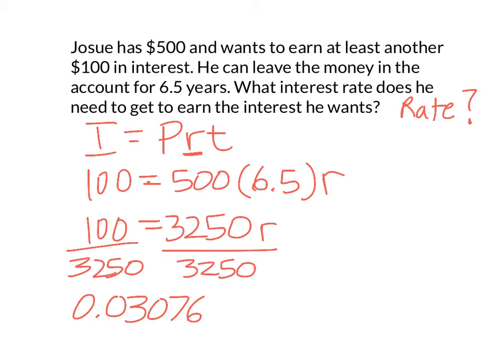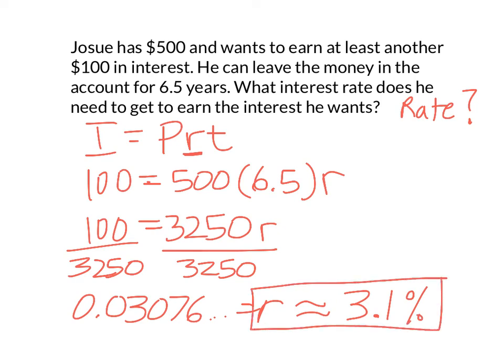We don't need that many decimal places. We're going to round to the nearest tenth of a percent, and of course we have to multiply by 100 to turn it into a percent — so times 100, that's 3.07, which rounds to 3.1%. And that's the interest rate he needs to earn in order to make the money that he wants.